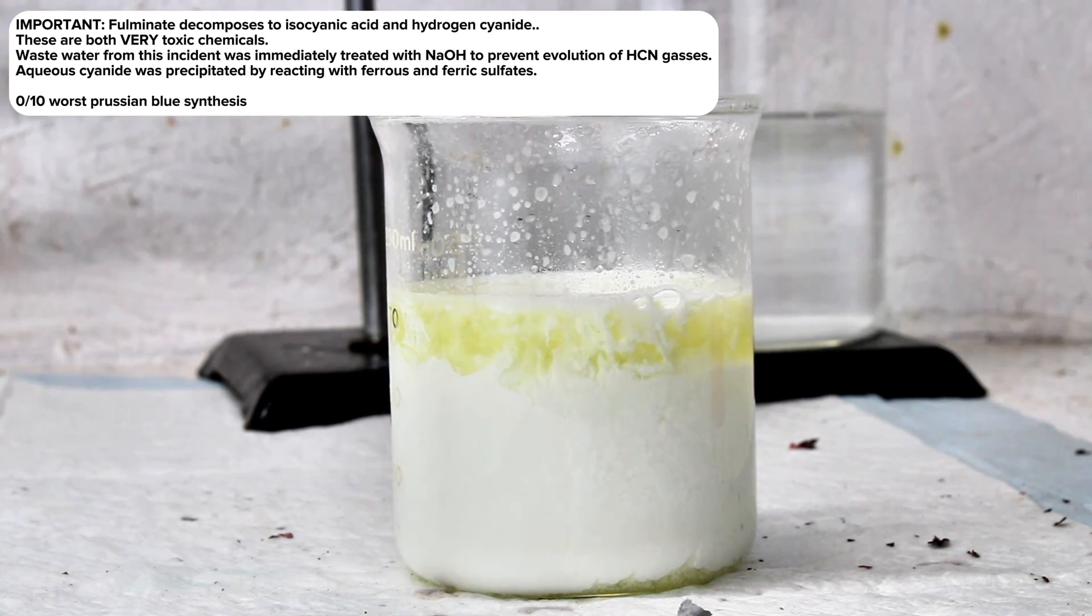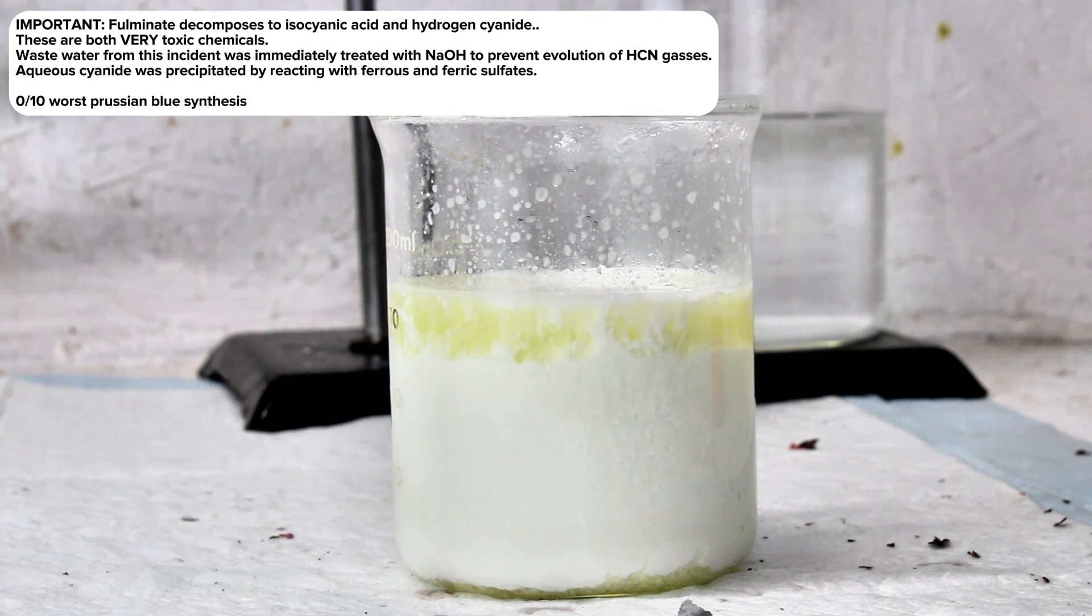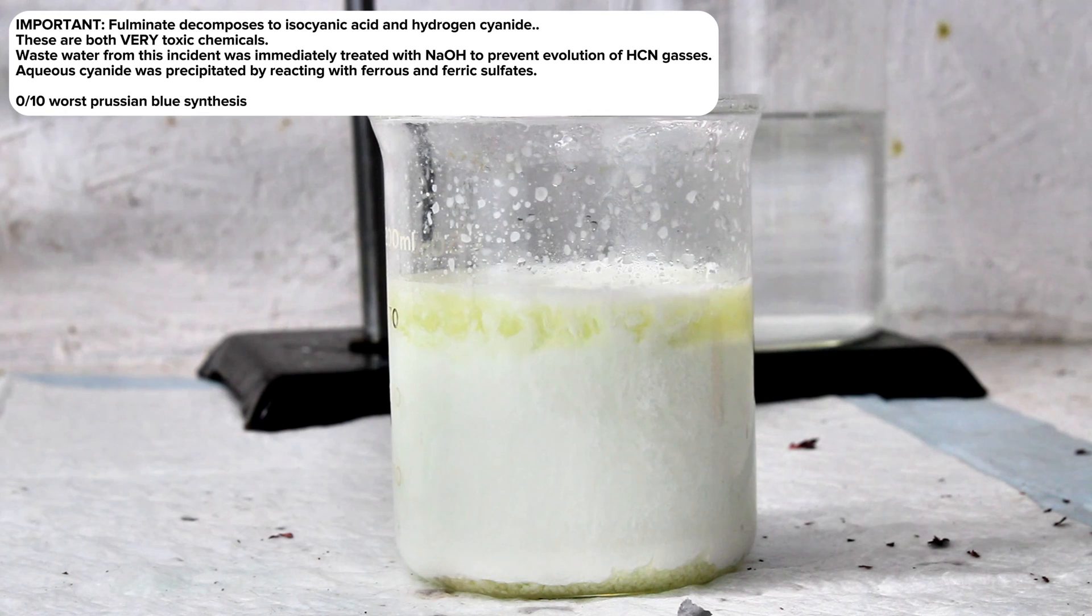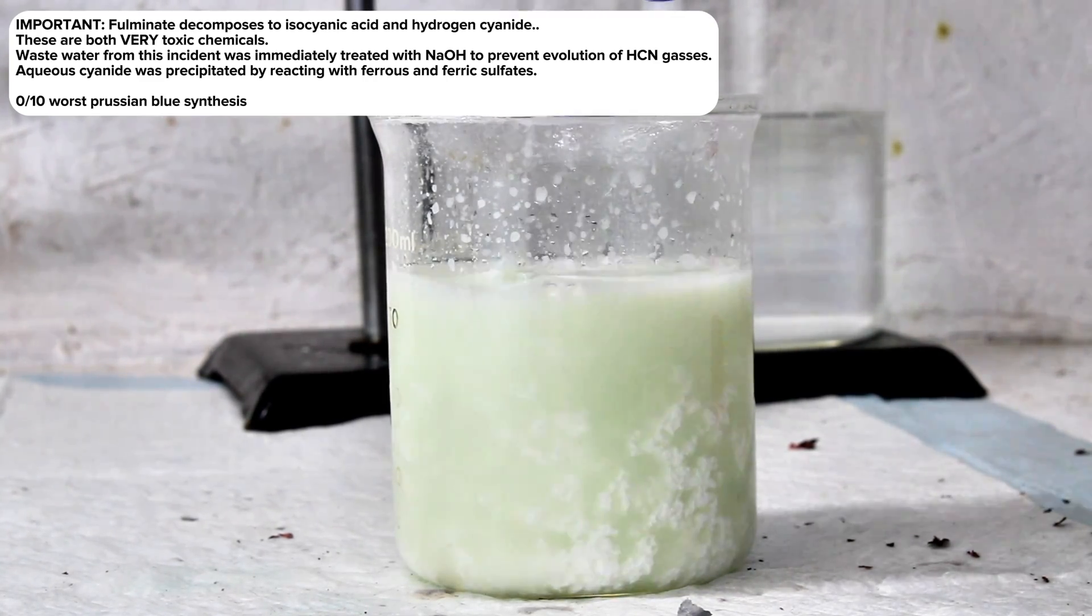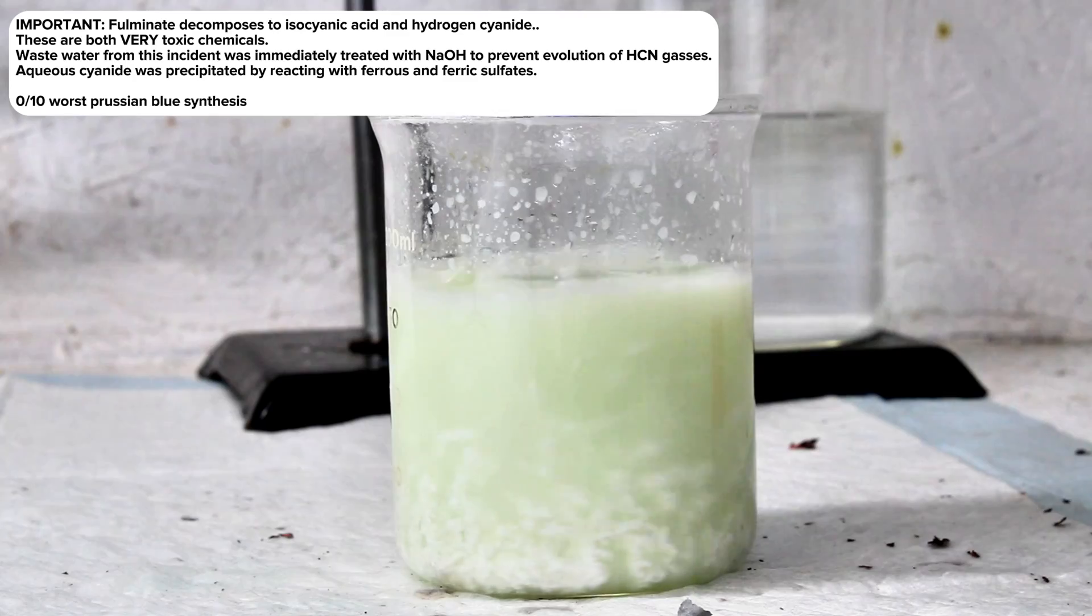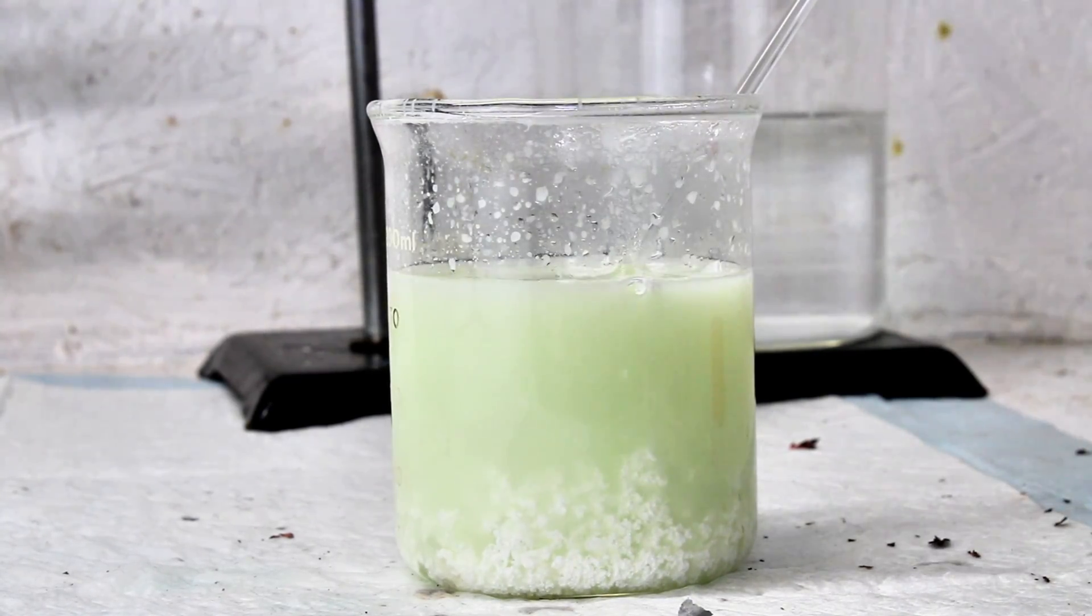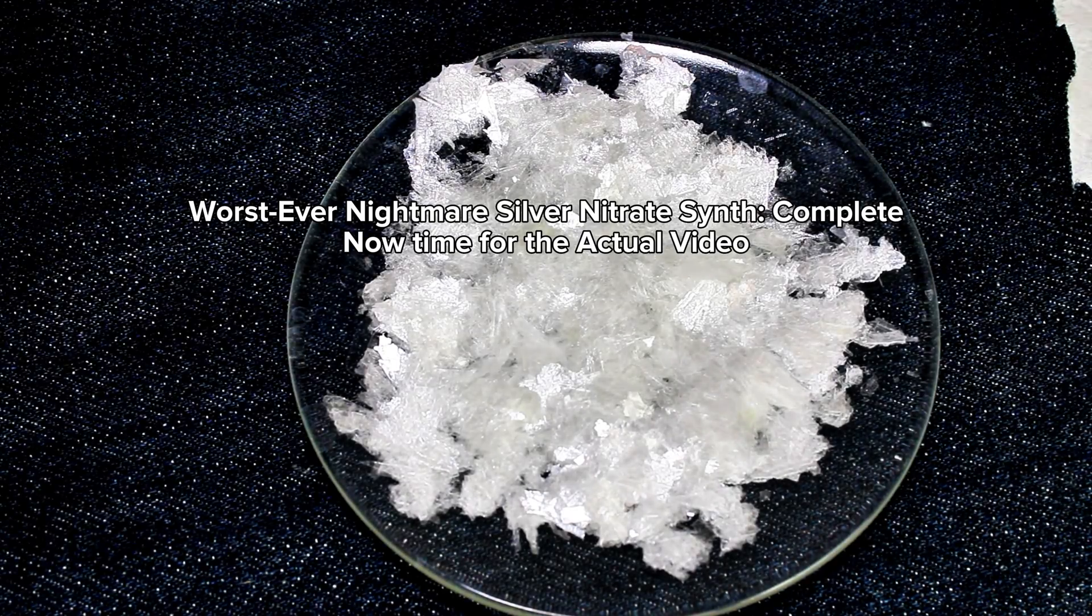So yeah, in case you ever accidentally make silver fulminate and start to panic, just remember you can get rid of it with salt. Also, best to probably just keep alcohols away from silver nitrate altogether. Also, I just realized that a minute ago I think I said that fulminates form in sulfuric acid, so before anyone calls me out in the comments, obviously I meant nitric acid.